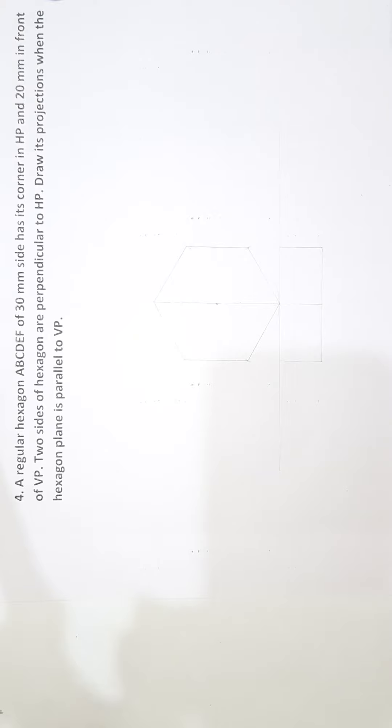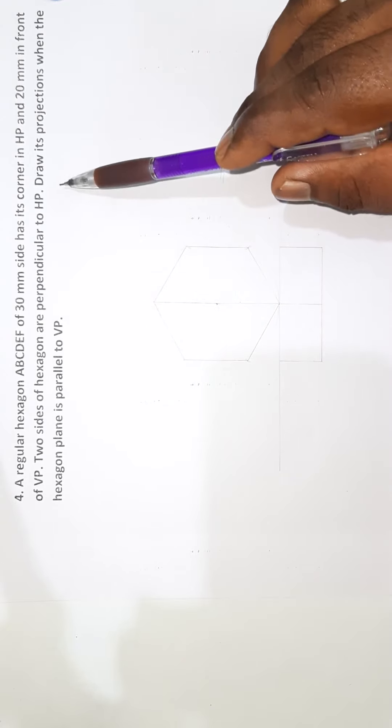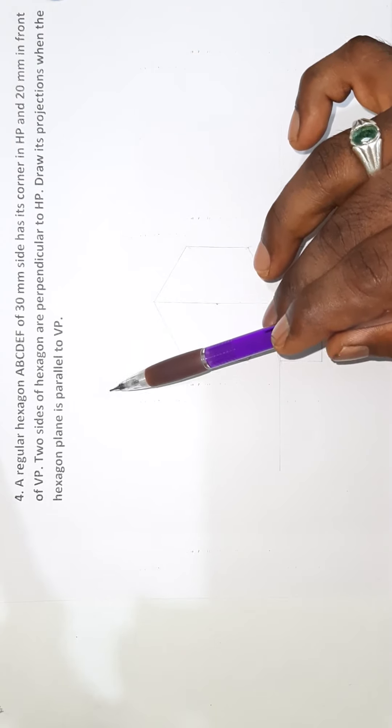Good morning. Problem number: a regular hexagon ABCDEF of 30mm side has its corner in the HP and 20mm in front of VP. Two sides of the hexagon are perpendicular to HP. Draw its projection when the hexagon plane is parallel to VP. In the front view and top view, drop its projection when the hexagon is parallel to VP.